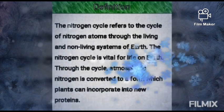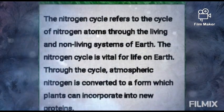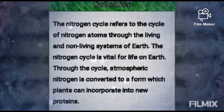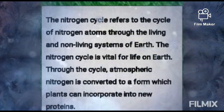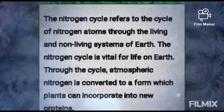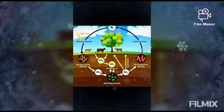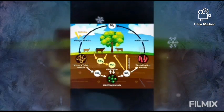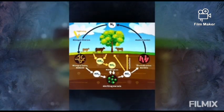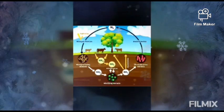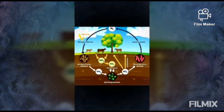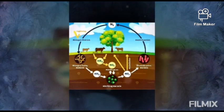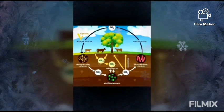Through the cycle, atmospheric nitrogen is converted to a form which plants can incorporate into new proteins.